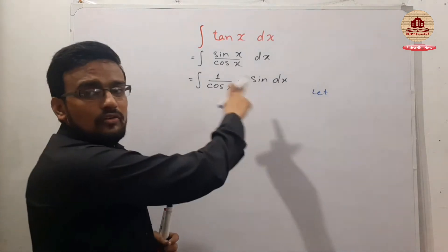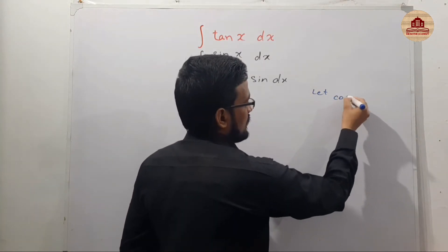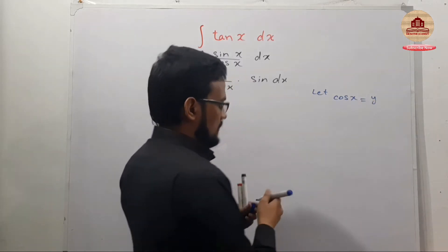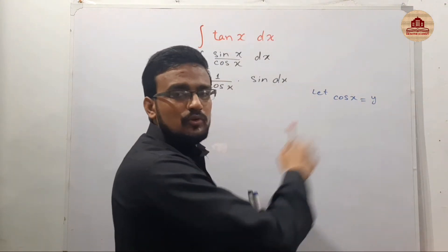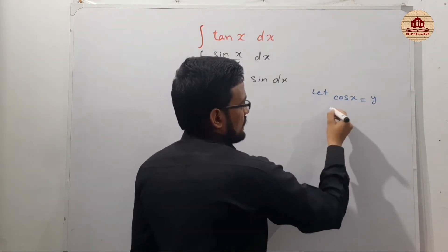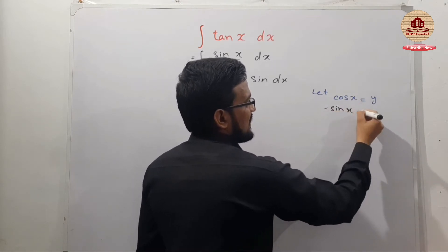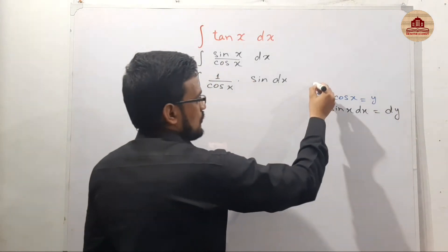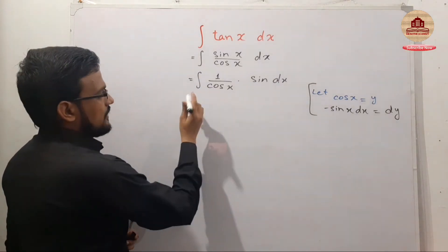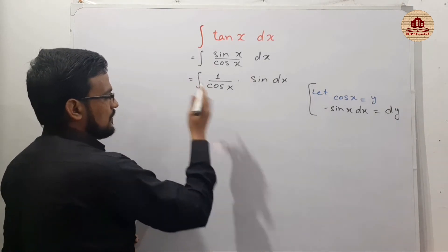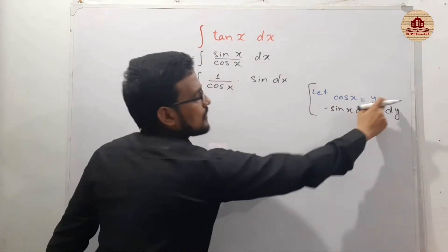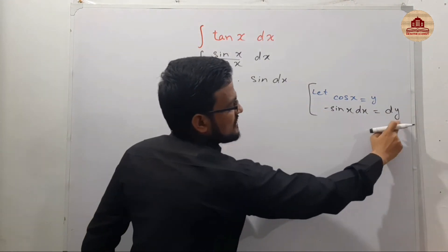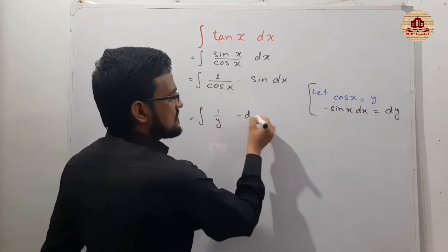Let cos(x) = y. Take the derivative on both sides — the derivative of cos is minus sin, so we get -sin(x) dx = dy. So sin(x) dx means minus dy. You can now use 1 over y for the cos(x) term, and substitute sin(x) dx with minus dy.